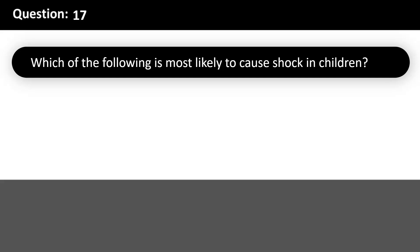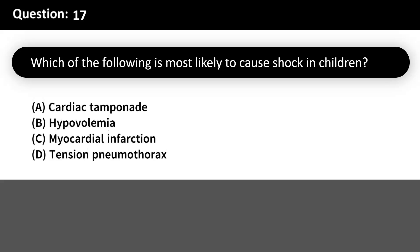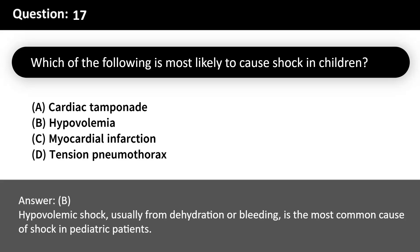Which of the following is most likely to cause shock in children? A. Cardiac tamponade. B. Hypovolemia. C. Myocardial infarction. D. Tension pneumothorax. Answer: B. Hypovolemic shock, usually from dehydration or bleeding, is the most common cause of shock in pediatric patients.